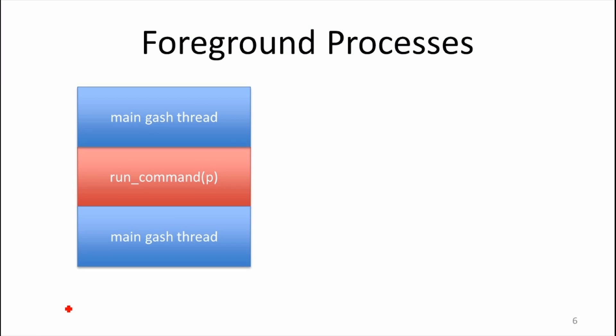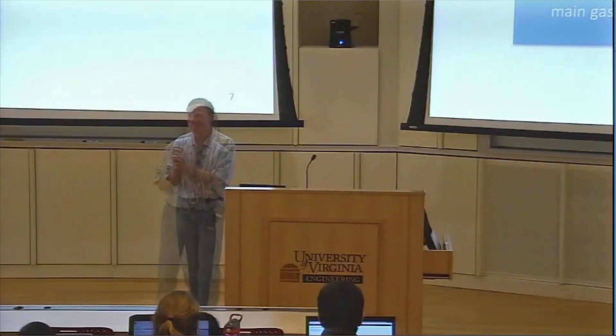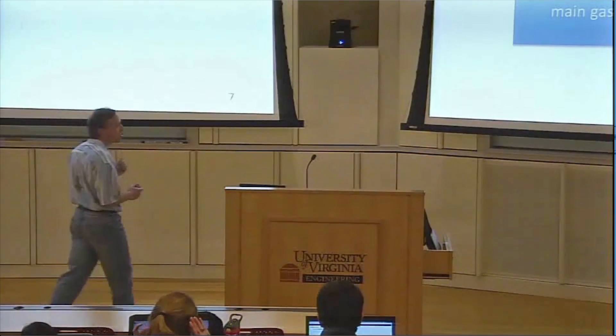Two real tricky things for problem set two. The first is background processes. For a foreground process, your main gash thread gets a command typed in, calls some functions that run a command, creates a process, and doesn't return until the process finishes. You then get back to your main gash code and print the command prompt again. How are things going to be different to make it a background process?